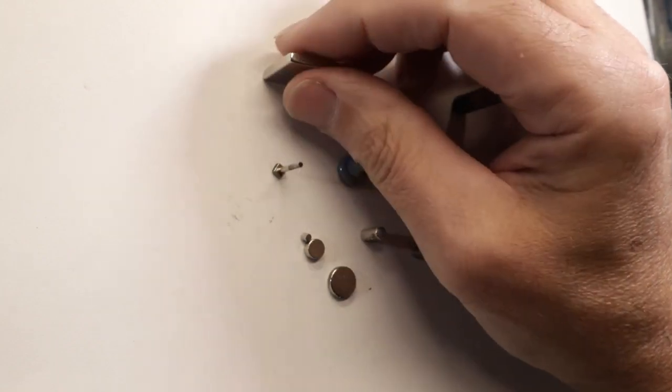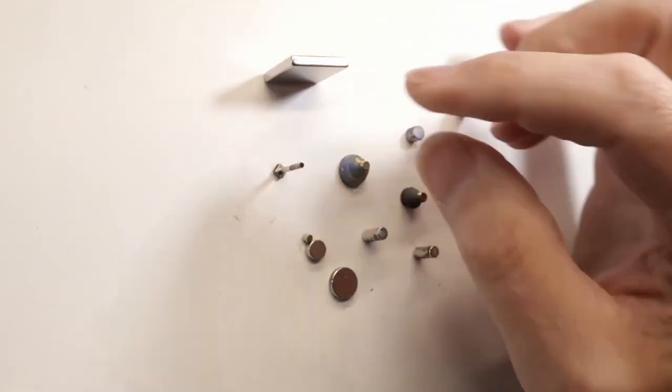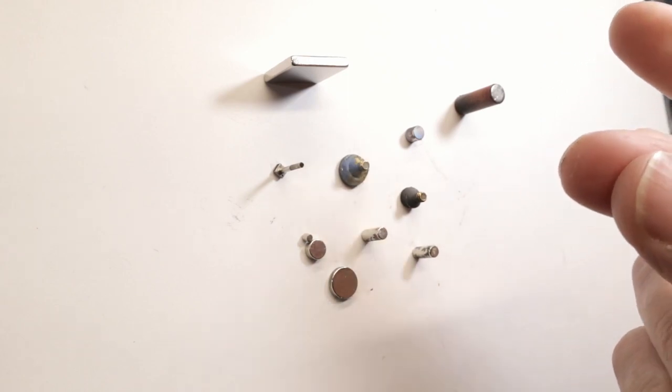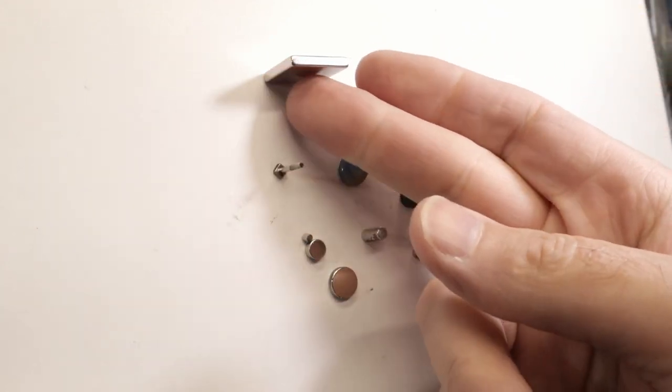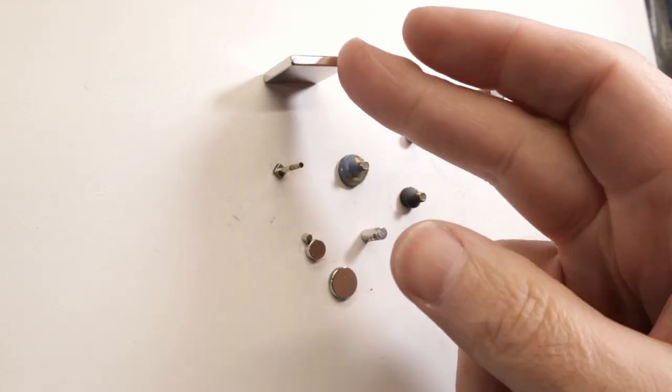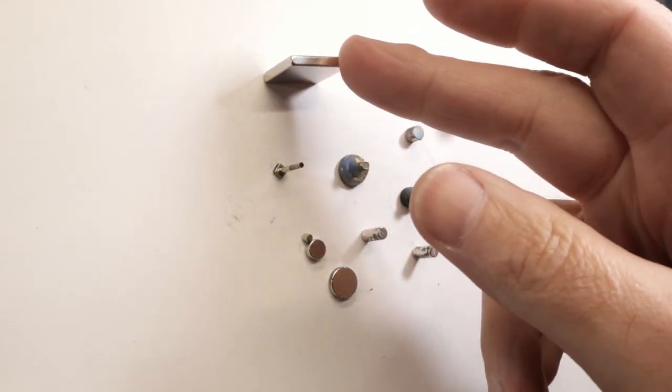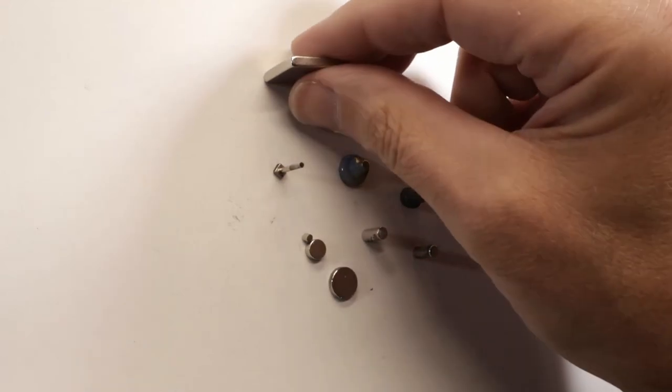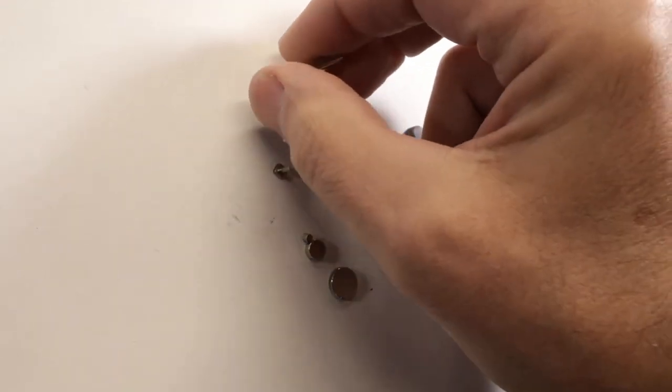They tend to break easy. So you'll definitely notice that if you have two strong ones that snap together very hard, or you drop one of these bigger ones on the floor, like on a hard concrete floor, there's a good chance that they'll break apart. And that's one of the reasons why they put this nickel coating on them to kind of help with that.